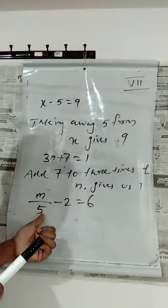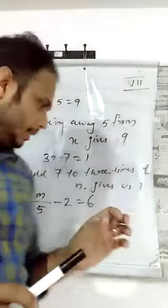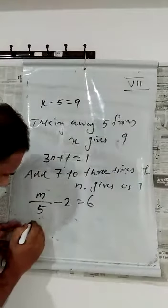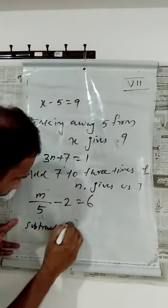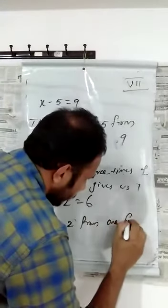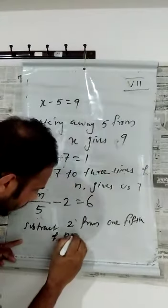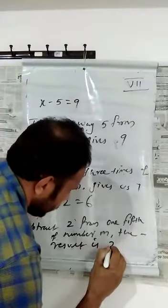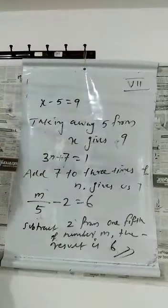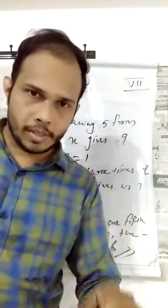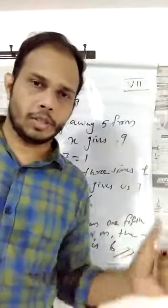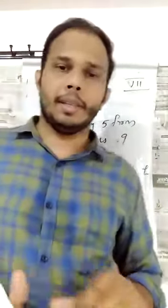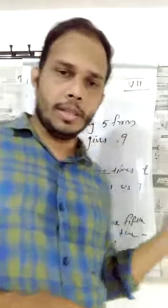We can write: subtract 2 from one-fifth of m — the result gives us 6. The equation is given and you need to make this equation into a mathematical statement. I hope that you understood these concepts.